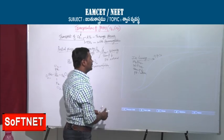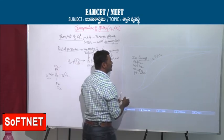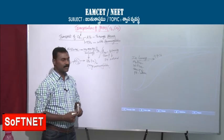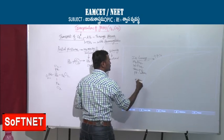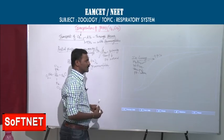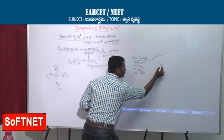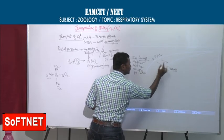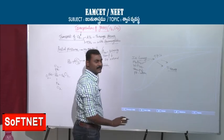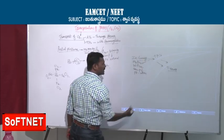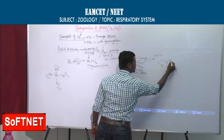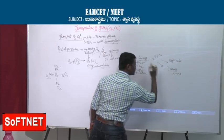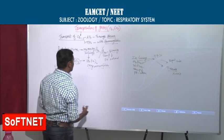In the lungs, 97% of hemoglobin is saturated with oxygen. The pressure of O2 is very high. When blood moves to the tissues, the graph comes down and shifts towards the right side — towards the x-axis.